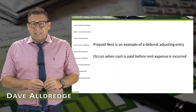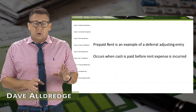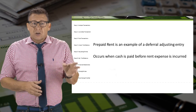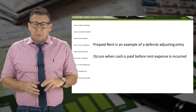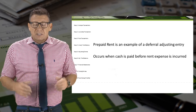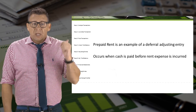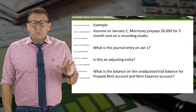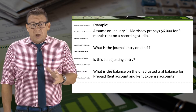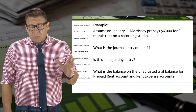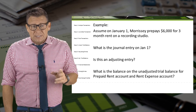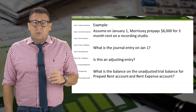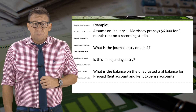Prepaid rent is an example of a deferral adjusting entry. It occurs when cash is paid before rent expense is incurred. Let's look at an example. Assume on January 1, Morrissey prepays $6,000 for three months' rent on a recording studio.